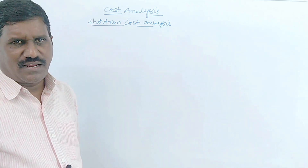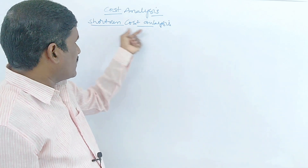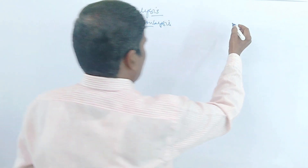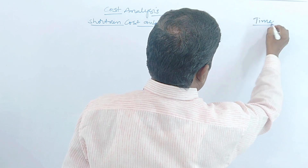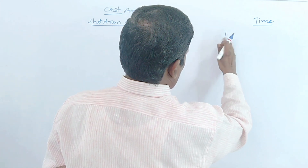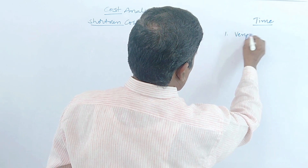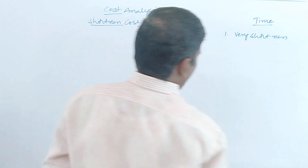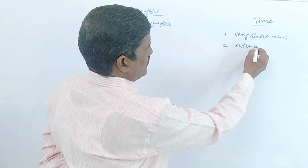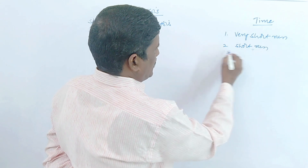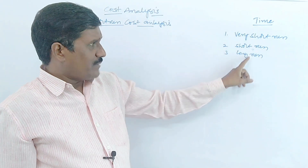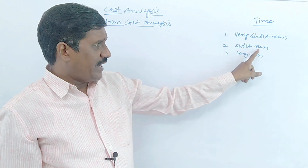How can we analyze the short-run cost analysis? Before that, you want to know about the division of time. Time is divided into three types: one is very short-run, second is short-run, and third is long-run.